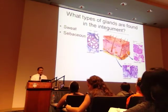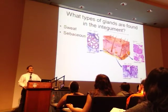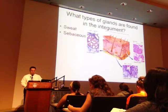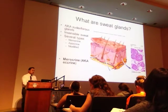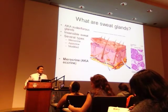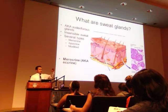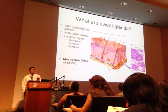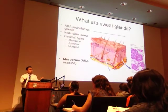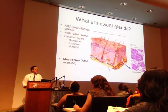Let's talk about glands. We have two main types: sweat and sebaceous. If we look at the different types of sweat glands — also known as sudoriferous glands — we have three types: merocrine, apocrine, and modified. Before characterizing each one, let's talk about what sweat actually is. What is it?